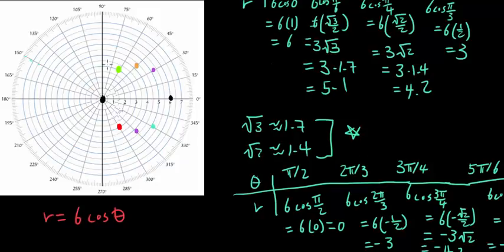You can continue by plugging in 180 degrees, but 180 degrees is going to give you negative 6, so you're going to go backwards 6, which is going to be this point again. If you keep going, you'll be plotting points where we've already plotted them — so it's going to repeat this sequence.